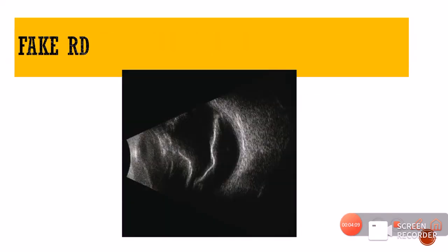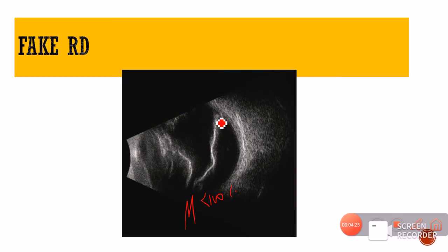This next image looks like an RD, but it is actually nothing but a membrane. How do you differentiate it? The reflectivity will be different — the spikes will always be less than 100%. Additionally, it is not uniformly attached and it is not even attached to the disc. Since it has no disc attachment and reflectivity is less, and on after movement testing this membrane is freely mobile, it indicates it is just a membrane present in the vitreous and not really an RD.